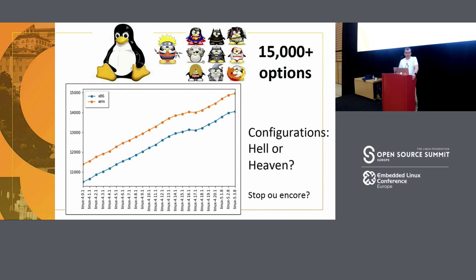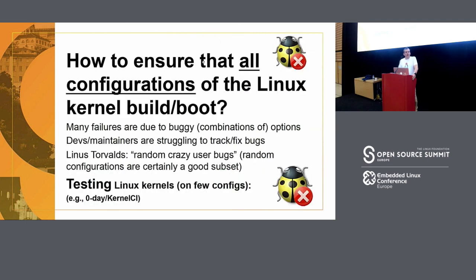But it can also be a kind of nightmare, because there are many failures that pop up due to wrong interactions between options. You activate two options together and suddenly something is wrong — there's a bug. It's really specific to that combination. Developers and maintainers are struggling to track bugs. I can see it in the mailing list. Hopefully they can fix bugs, though sometimes it takes some time. Linux says there are random, crazy user bugs — I think there are random configurations that cause bugs. That's why it's so crazy sometimes.